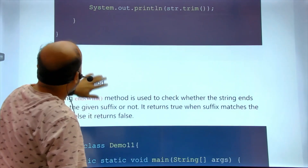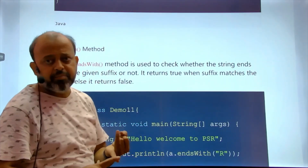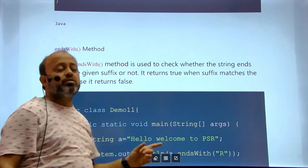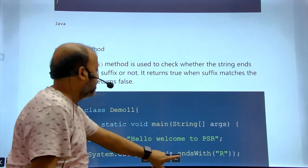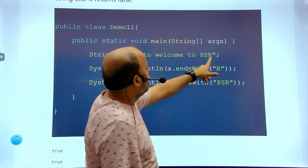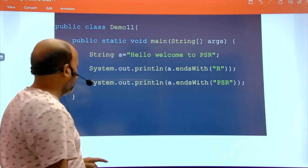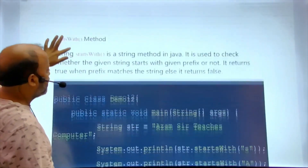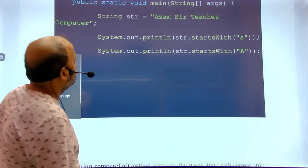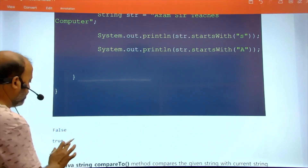endsWith() and startsWith() return boolean values, so you should know their return type. For example: 'hello welcome to psr print talent' — endsWith('r') returns true; if you check any other character it returns false. For startsWith(): 'I am sir teaches computer' — startsWith('s') returns false; startsWith('a') returns true. You can see the outputs: true and true.